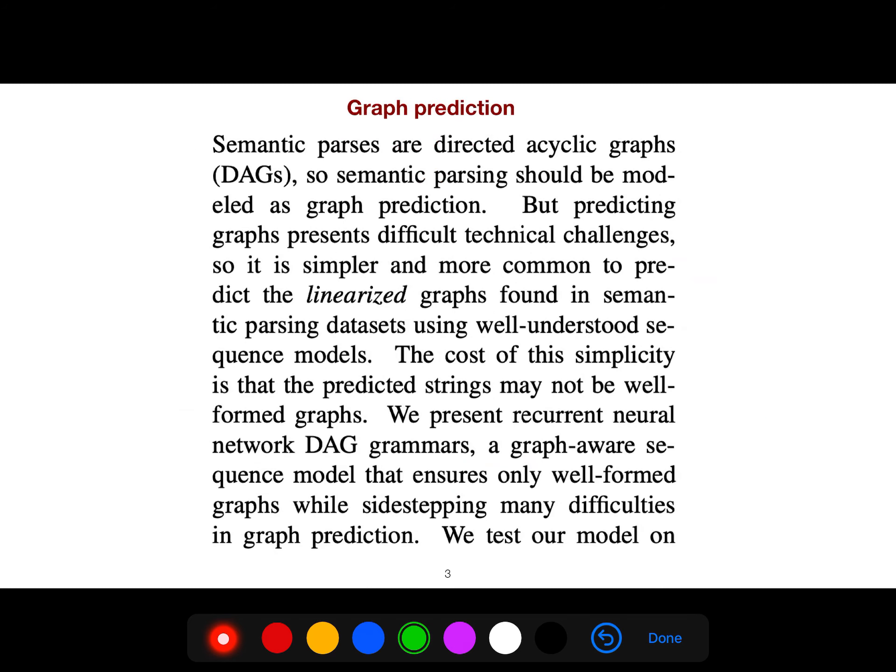They are working with the graph prediction problem. Semantic parses are directed acyclic graphs, so semantic parsing should be modeled as graph prediction. But linearizing them doesn't always work because the result may not be a reasonable graph.